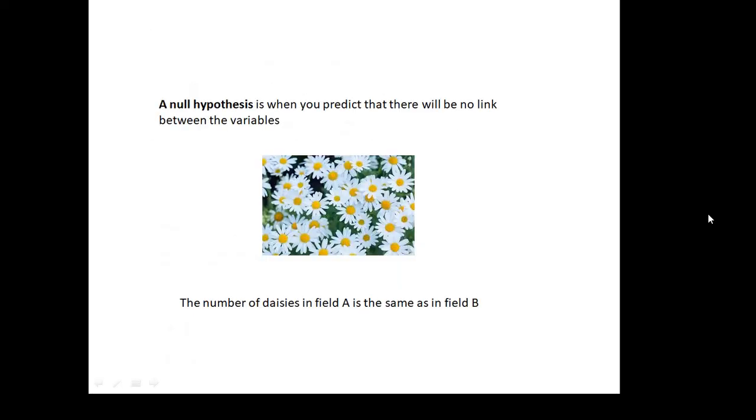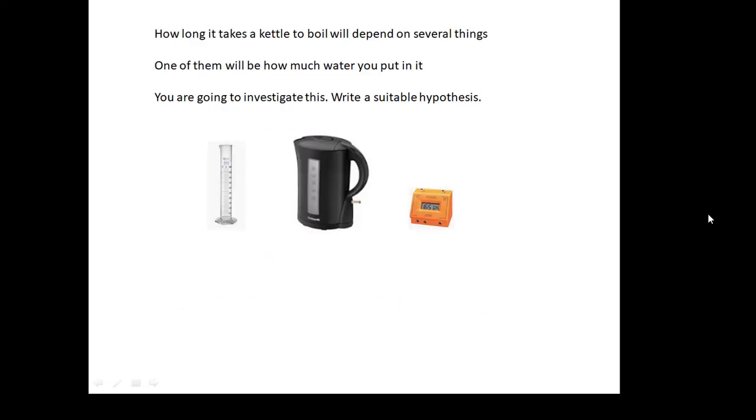It could be a null hypothesis when you predict that something will make no difference to something else. Consider this. How long it takes a kettle to boil will depend on several things. One of them will be how much water you put in it. You are going to investigate this. Write a suitable hypothesis. This is a very simple one. When we put more water in the kettle, then the time it takes to boil will increase. It'll take longer to boil. And that's a simple hypothesis.